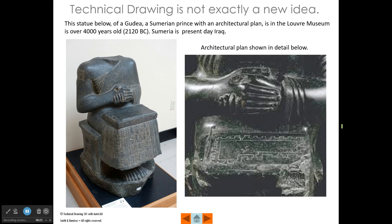Humans have been making technical drawings for a long time. This statue, which is about 4,000 years old, shows a guy — perhaps an early architect — with an architectural plan on his lap. This has been dated to over 4,000 years ago.